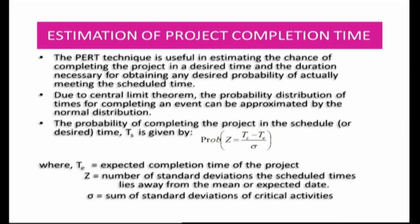The probability of completing the project by the scheduled time t_s is given by P(z), where z = (t_s - t_e) / sigma. Here, t_e is the expected completion time of the project, z is the number of standard deviations the scheduled time lies away from the mean, and sigma is the sum of standard deviations of all critical activities.